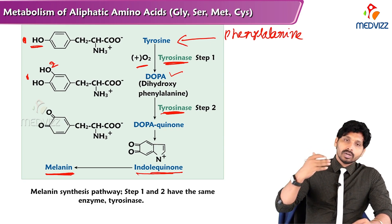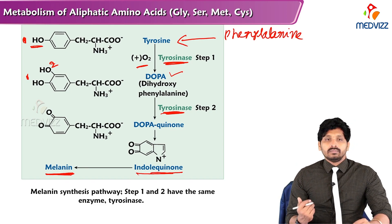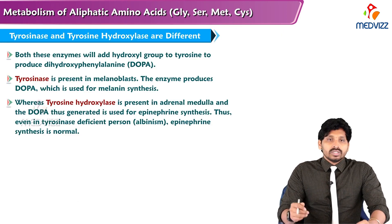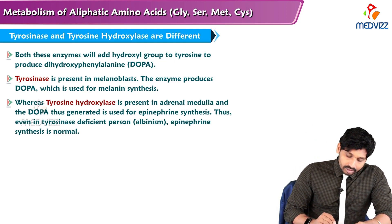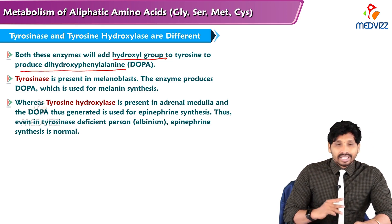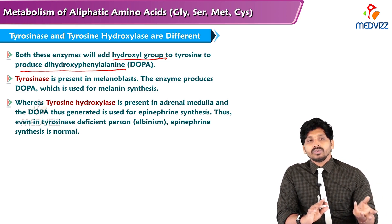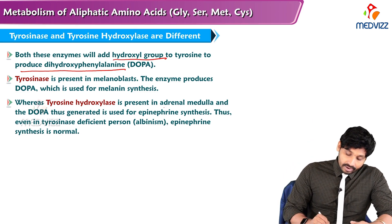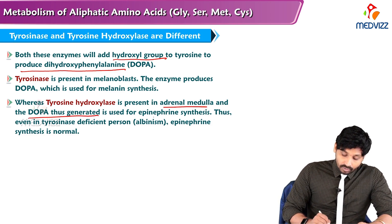The pathway is: tyrosine to DOPA, DOPA to DOPA quinone, DOPA quinone to indole quinone, and indole quinone to melanin. Tyrosinase and tyrosine hydroxylase both add a hydroxyl group to tyrosine to produce dihydroxyphenylalanine. Tyrosinase is present in melanoblasts, where the DOPA produced is used for melanin synthesis.